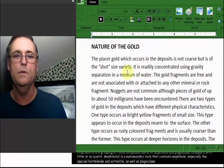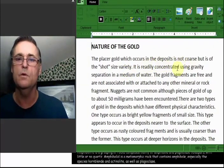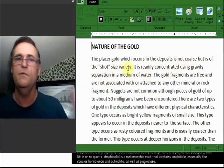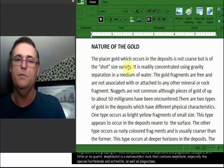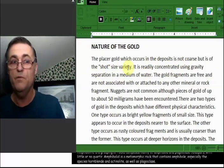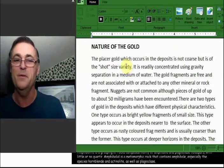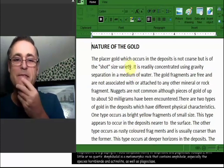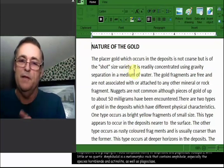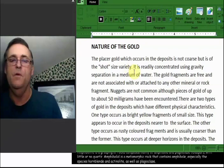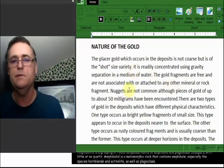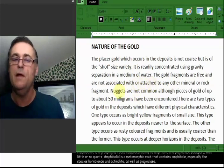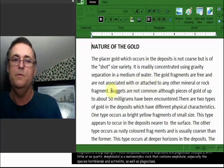The nature of gold: Placer gold which occurs in deposits is not coarse, but is of shot-sized variety. Now if you've ever been around a shotgun and opened up a shell, you'll find the little pellets. That's what he's talking about. He's comparing it to those. If you had a few of those, five or ten, you've got something. There's color in that pan then. It is readily concentrated using gravity separation in a medium of water. It's panned. Simple. Gold fragments are free and not associated with or attached to any mineral or rock fragments. So where did it come from? It was broken off of a rock fragment that had gold in it at some point.